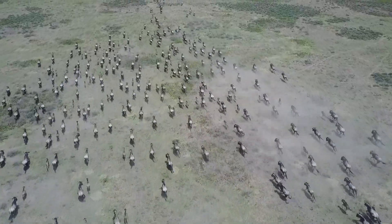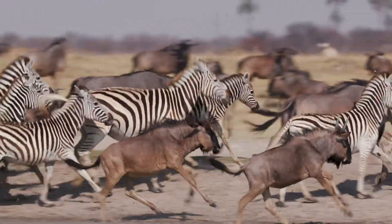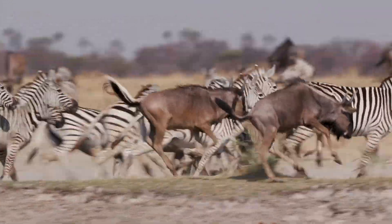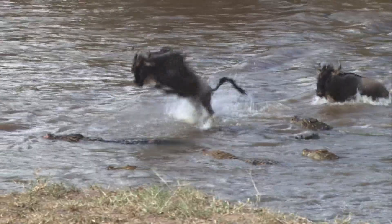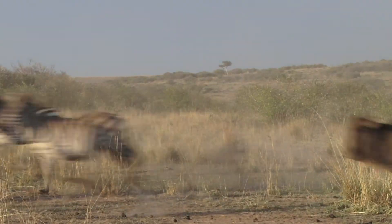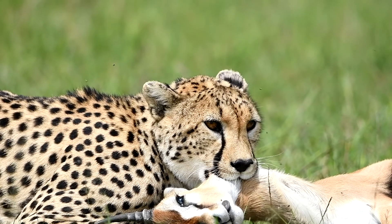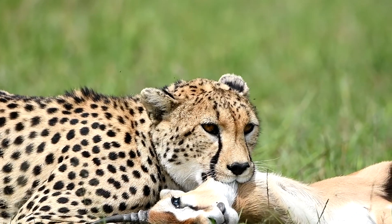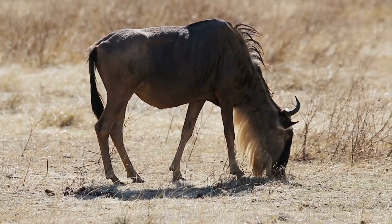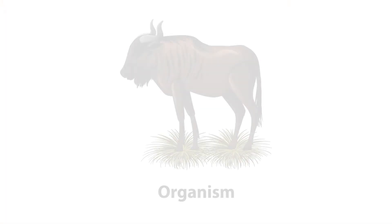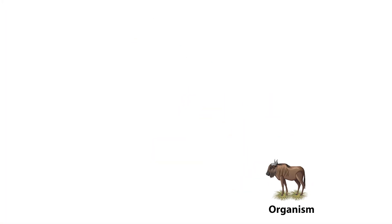To study different parts of an ecosystem and better understand the interactions between organisms and the environment, scientists organise ecosystems into different levels. The simplest level in an ecosystem is a single organism. In an African grassland, a single wildebeest is an example of an individual organism.